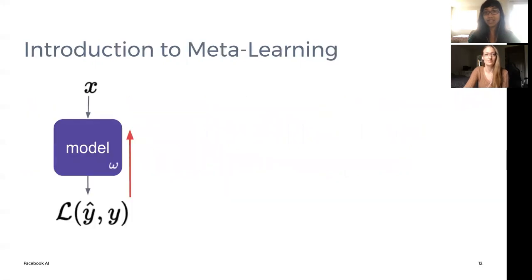Learning the loss function that is used to train the model comes under the purview of meta-learning. To train a model with parameters omega to fit a dataset of tuples x, y, one needs to initialize the model, pick a learning rate, pick an optimizer, and a loss function.